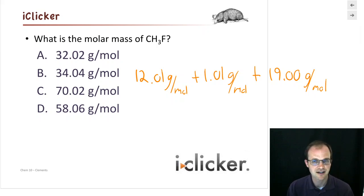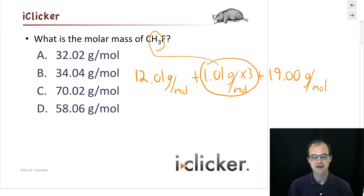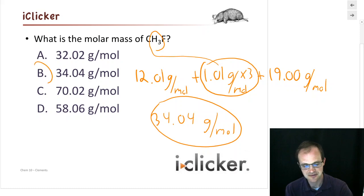You're right. Good job. We forgot the times 3 here. We have 3 hydrogen atoms. So when we do our molar mass, we need to multiply that hydrogen by 3. So we get 12 plus 3 plus 19. 34.04 grams per mole. And so we got B over here.